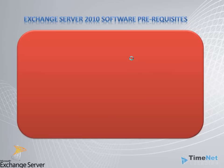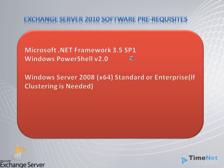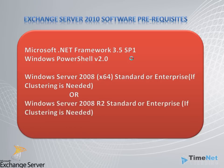Now we can go on to software pre-requisites. You need to have Microsoft .NET Framework 3.5 SP1 and Windows PowerShell version 2 to get started — Exchange Server will not allow you to install it without these two components. You can install Exchange Server 2010 on Windows Server 2008 64-bit Standard or Enterprise. You should choose Enterprise if you need to enable clustering for mailboxes or Hub Transport. You can also use Windows Server 2008 R2, which comes only in 64-bit, in Standard or Enterprise depending on your clustering needs.